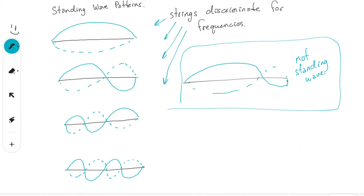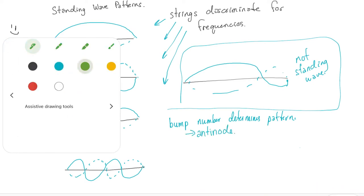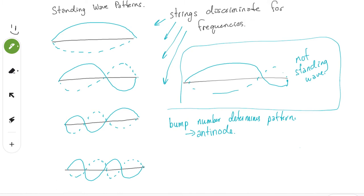The way we recognize these patterns is by the number of bumps — remember the bump number. It determines the pattern. Now we're going to get a little bit more technical: the bumps actually have a specific name. We call those regions the anti-node. Another way to think about anti-node is going to be where the node is not located, so we need to find a node in this standing wave pattern.